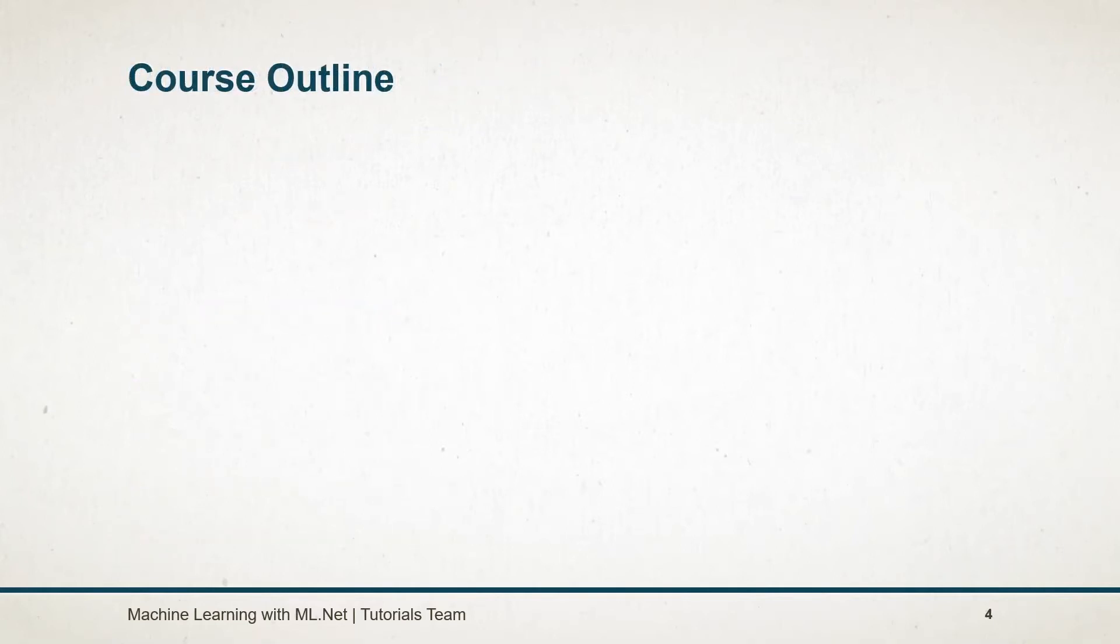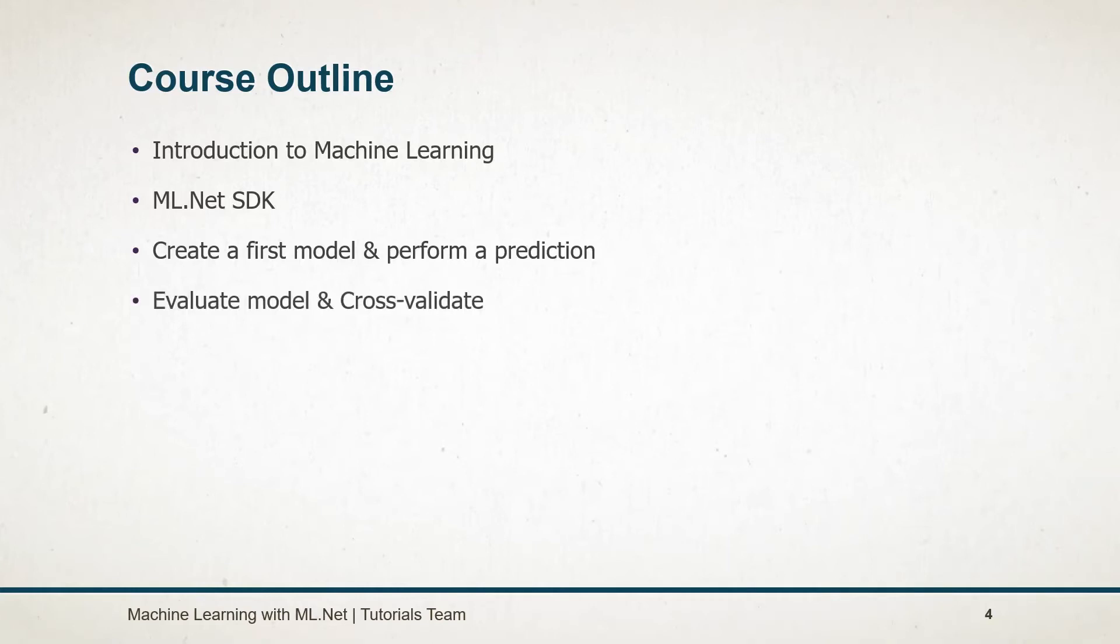The course outline includes: introduction to machine learning and understanding how it's different from deep learning and artificial intelligence. Learn what is ML.NET and understand the structure of the SDK. Create the first model for regression and perform prediction on it. Evaluate the model and cross-validate it.